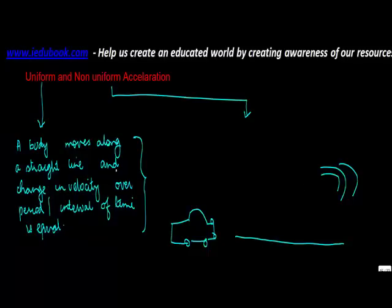So when the car moves along a straight line and changes in velocity over period of time, let's say there were three time intervals: R1, R2, and R3. The change in velocity over each interval of time is equal.